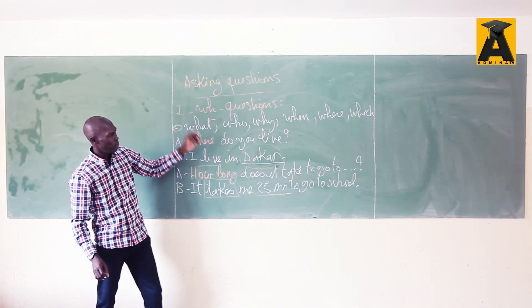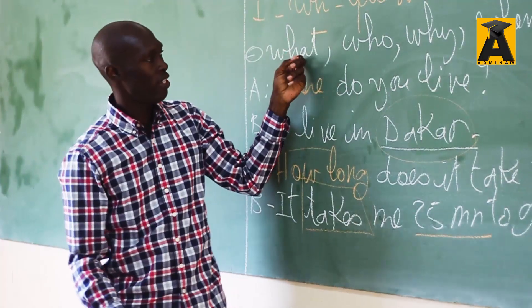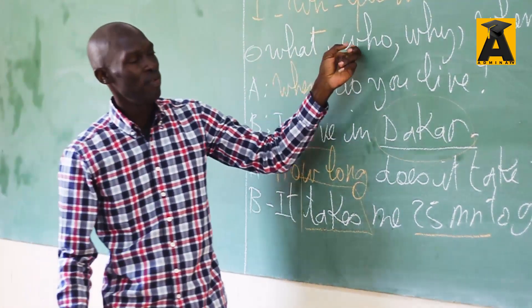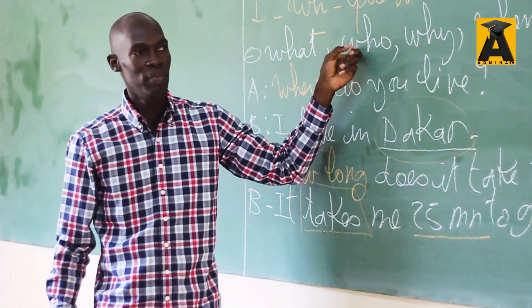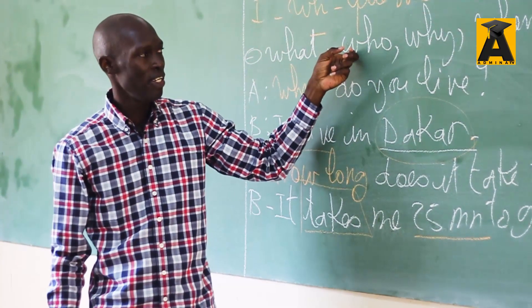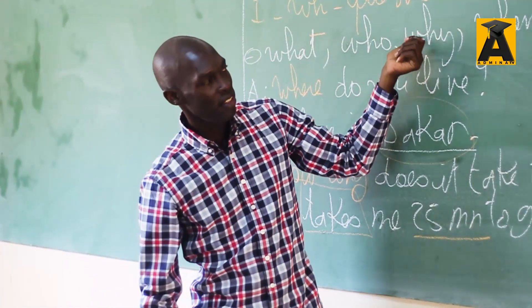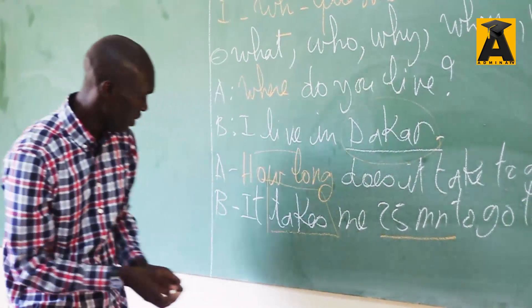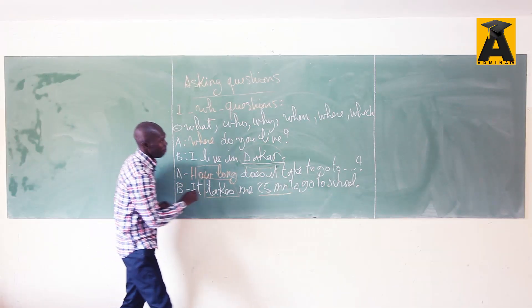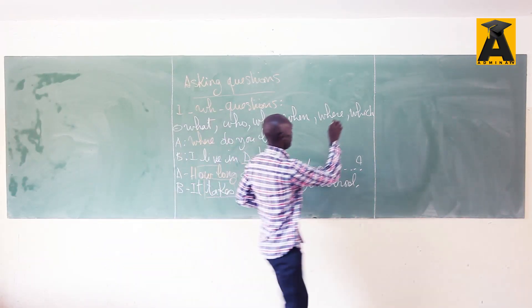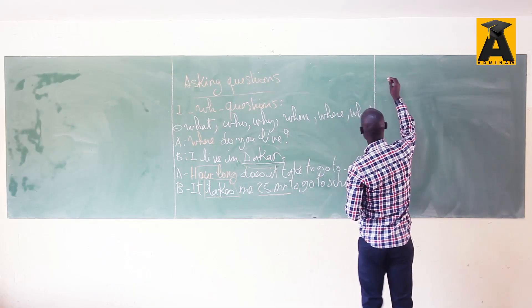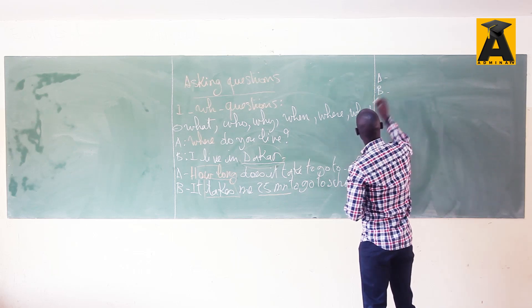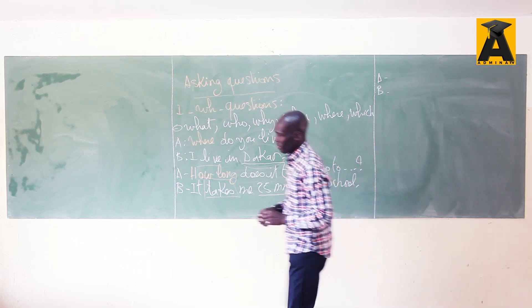This is just a list: we use 'what' for objects or things, 'who' for people or a person. Then you see an example with 'why'.